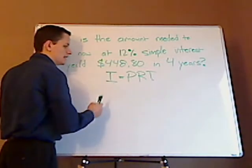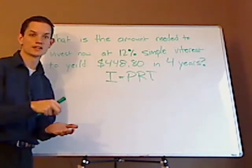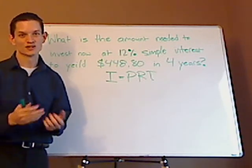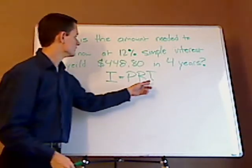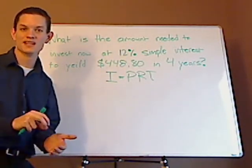I is the interest, P is the principal, that's the amount that you're investing, R is the rate that it's at, and you have to change the percentage to a decimal, and then time is in years. So if it's a month, you have to convert it to years.